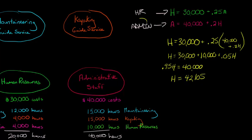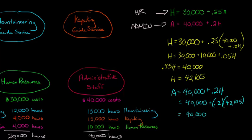Now let's calculate A, which is the administrative end. So A equals 40,000 plus 0.2H, equals 40,000 plus 0.2, and then we're going to plug in for H because we already solved for H. 42,105, now equal to 40,000, and then if we just multiply this out, we get 8,421, and then that equals 48,421. That's A. So now we know A, and we also know H.